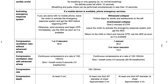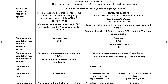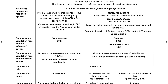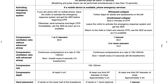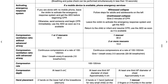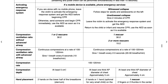The compression-to-ventilation ratio without an advanced airway in adults is 30 to 2. In one-rescuer child or infant CPR, it's also 30 to 2. And with two or more rescuers, it will be 15 to 2.